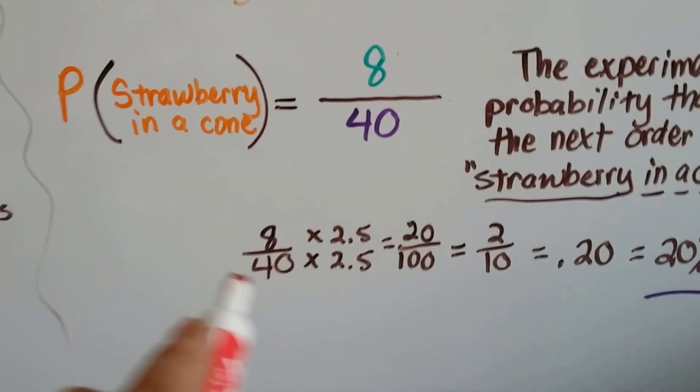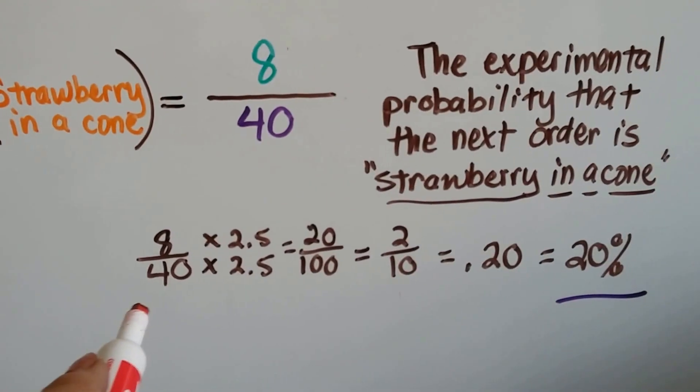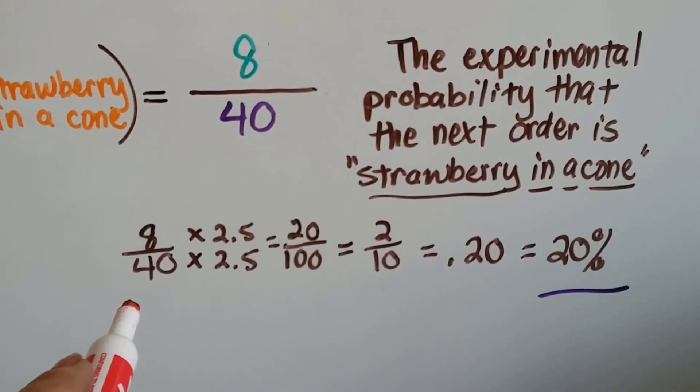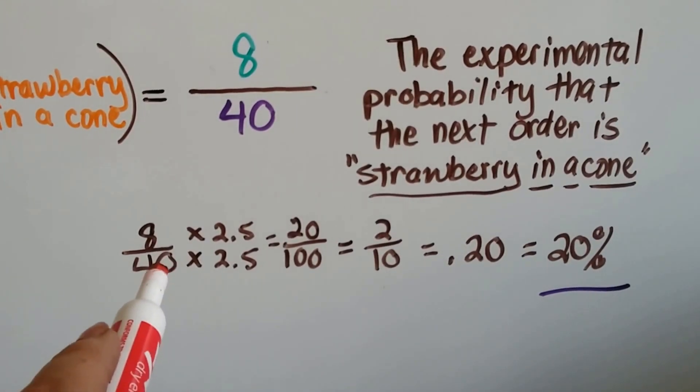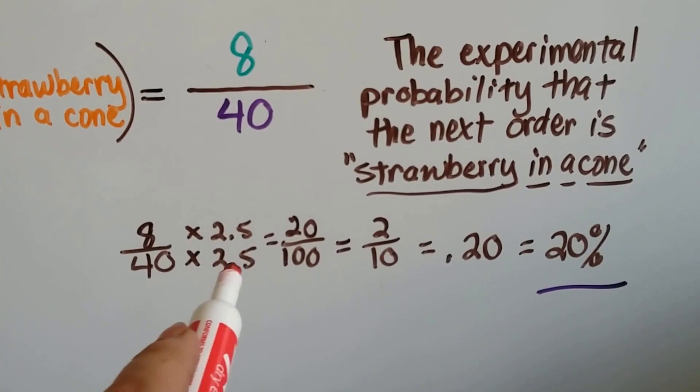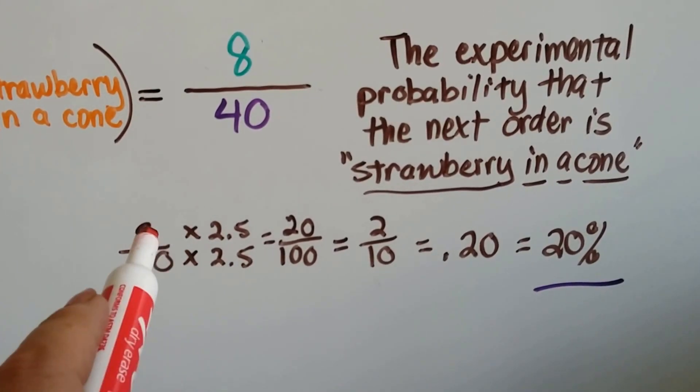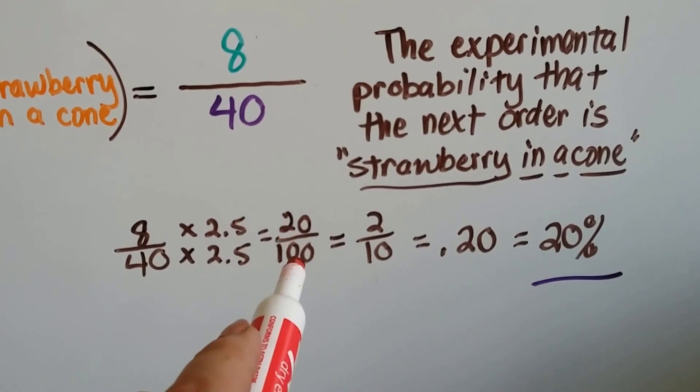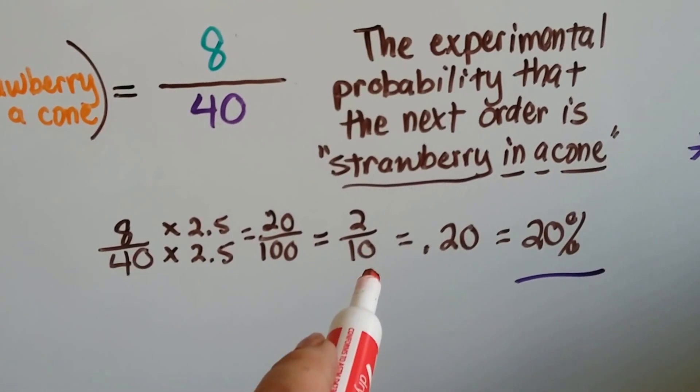Now, we can convert this into fractions, decimals, and percentages, like we did in the last video. What does 40 need to become 100? It needs to be multiplied by 2½. So, we multiply the numerator, 8 by 2½, and that's 20 over 100, or 20%.